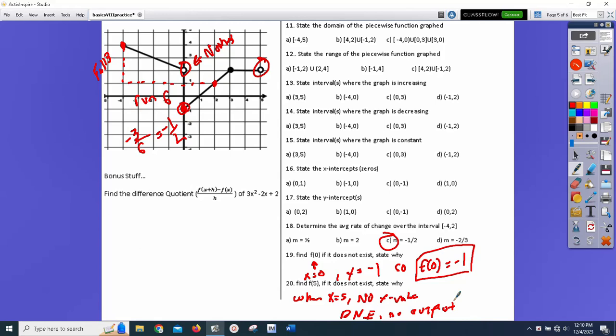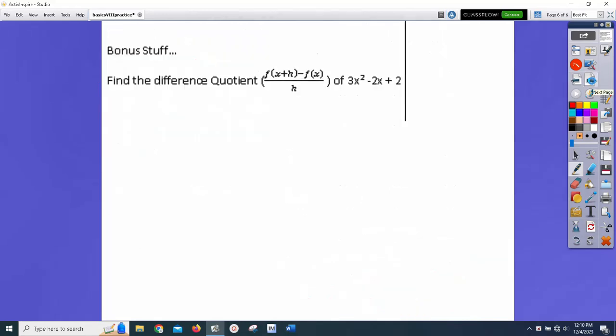And the last thing to do is the only bonus question I put on there. It will be worth, let's go with 4 points. It's the only one I had room for. If I change colors, it will work better. Find the difference quotient. F of x plus h minus f of x over h of 3x squared minus 2x plus 2. Yeah, the first thing I'm going to do is I'm going to do this. Oh, pen's not working. Yeah, I think we'll stop this. Just so I can reset the little buffer or whatever is going on here.